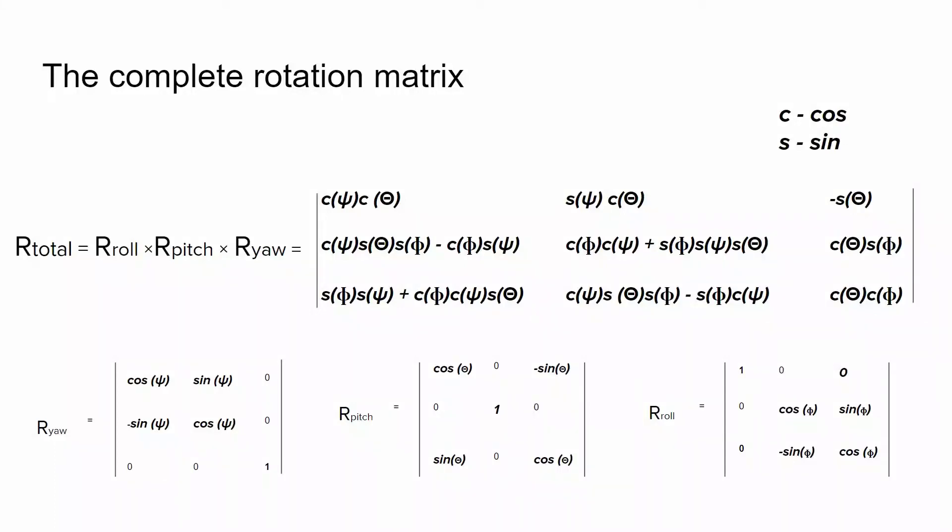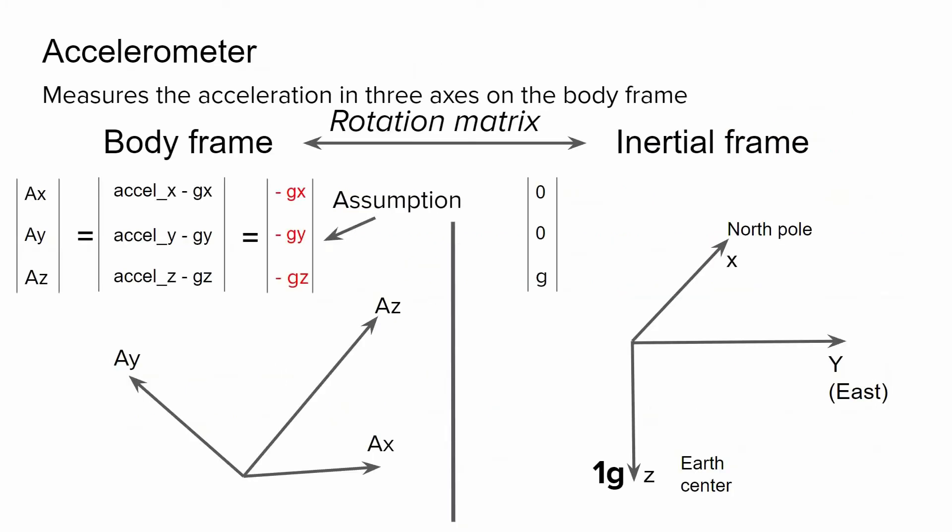After understanding the rotation matrix and the Euler angles, let's talk about how we can use sensor readings to estimate roll, pitch, and yaw angles. Let's start from the accelerometer.